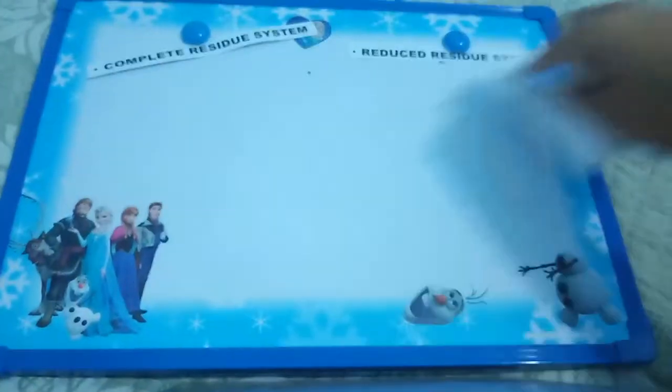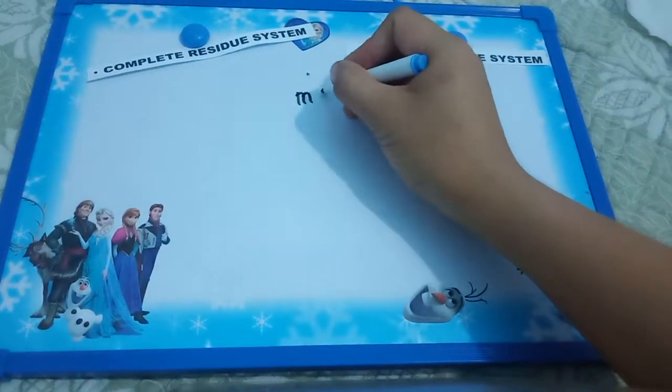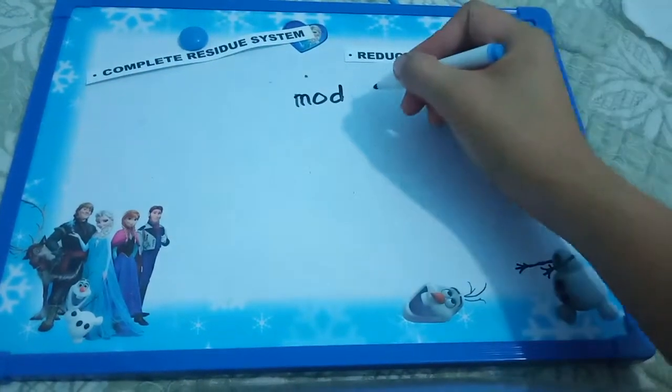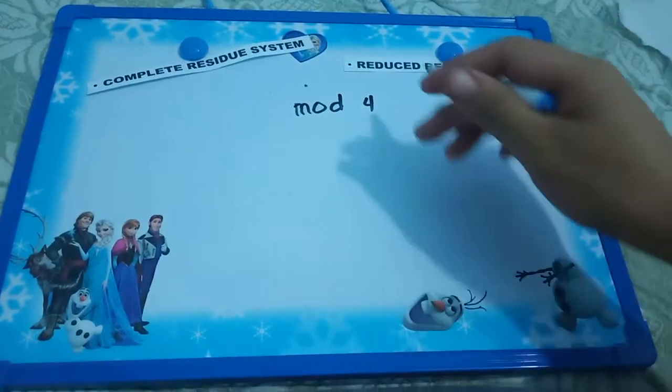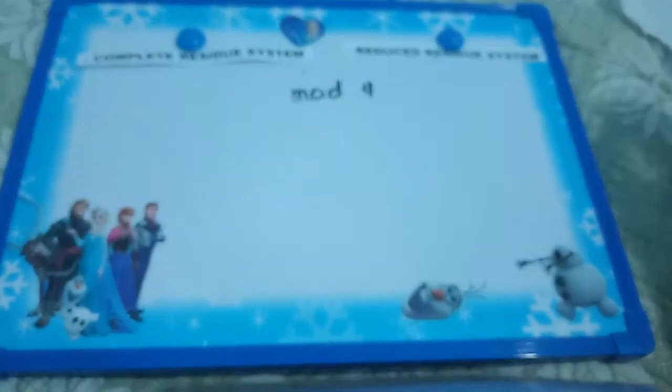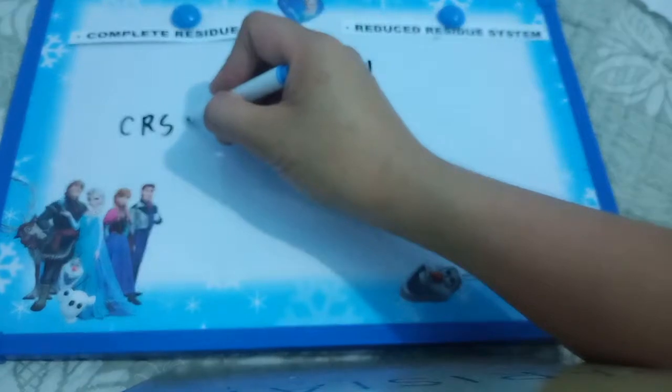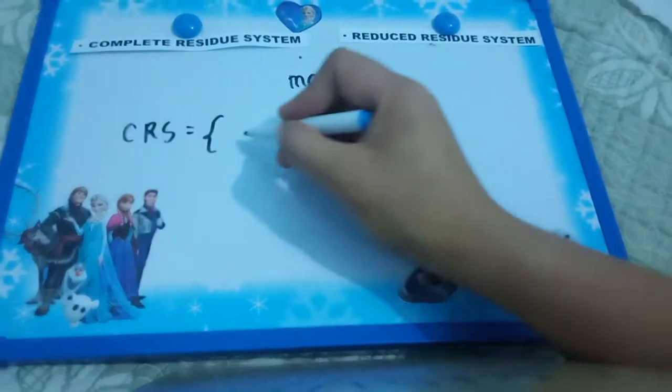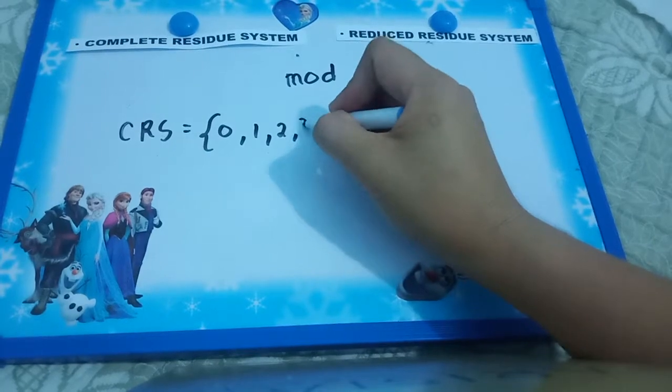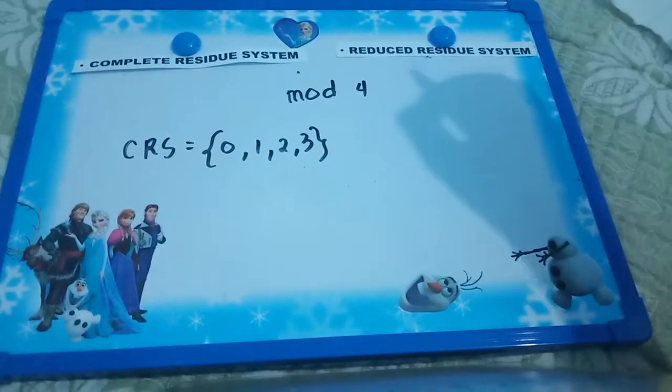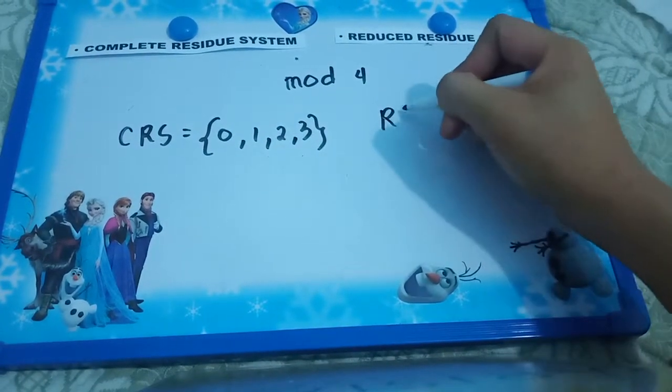We have here mod 4. What could be now the complete residual system? The CRS, the complete residual system, is 0, 1, 2, and 3. How about the reduced residual system?